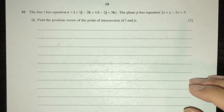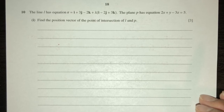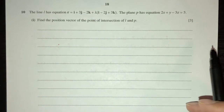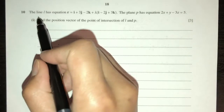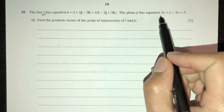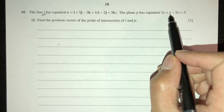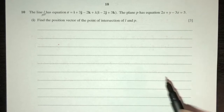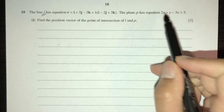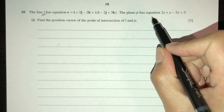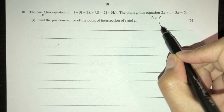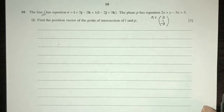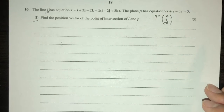Question ten: line L has equation r = i + 3j minus 2k + λ(i + 2j + 3k). The plane has equation 2x + y minus 3z = 5. Given the equation of a plane, the normal vector is given by the coefficients, so the normal is (2, 1, minus 3).